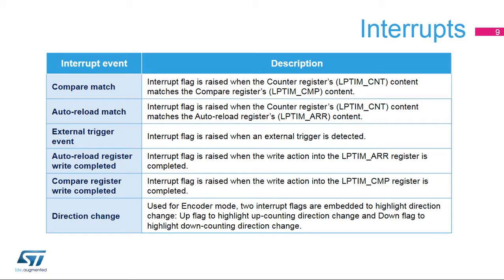The low-power timer peripheral features six interrupt sources. The compare-match interrupt is raised once the content of counter register LP-TIM-CNT matches or is greater than compare register LP-TIM-CMP. The auto-reload match interrupt is raised when the counter register's content matches the auto-reload register's content. The external-trigger event interrupt is raised when a valid external trigger is detected. The auto-reload register write completed and compare register write completed interrupts are raised when the transfer of LP-TIM-ARR and LP-TIM-CMP content is completed from the APB interface logic into the peripheral's core logic — which are in two different clock domains. These two interrupts are useful in mitigating the overhead of polling on the status of writing to these registers when the peripheral core clock is too slow compared to the APB interface clock.